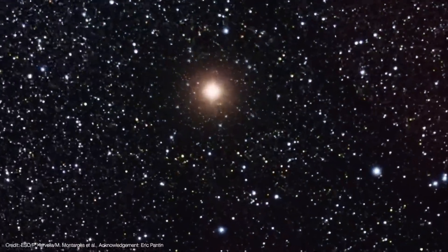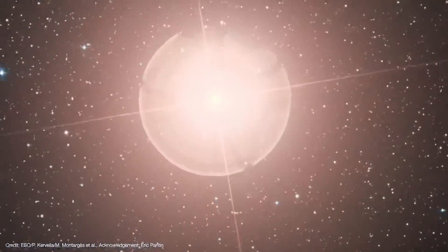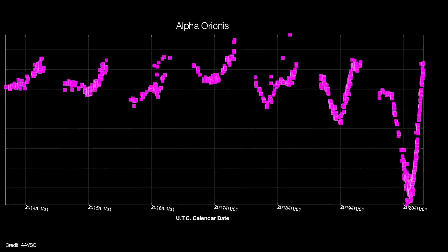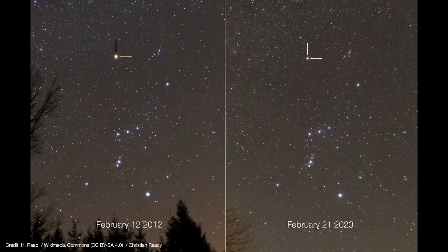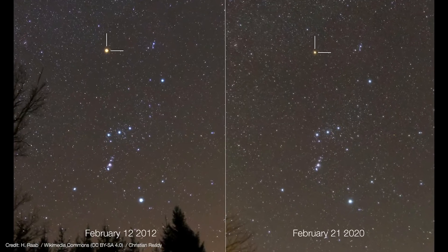In October 2019, the star Betelgeuse began dimming rapidly. Even though Betelgeuse is a well-known variable star, the Great Dimming was an unprecedented event. By February 2020, the red supergiant lost more than two-thirds its normal brightness. It got so faint it was easily noticeable to the unaided eye.